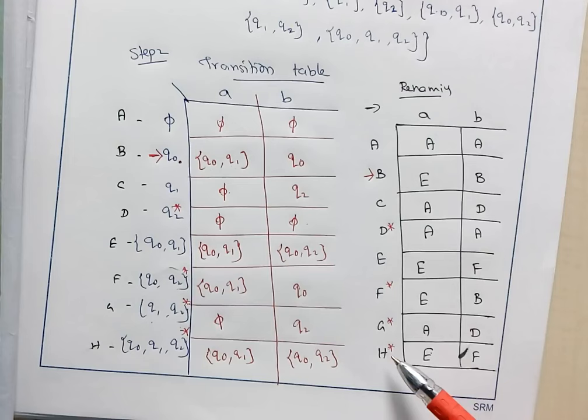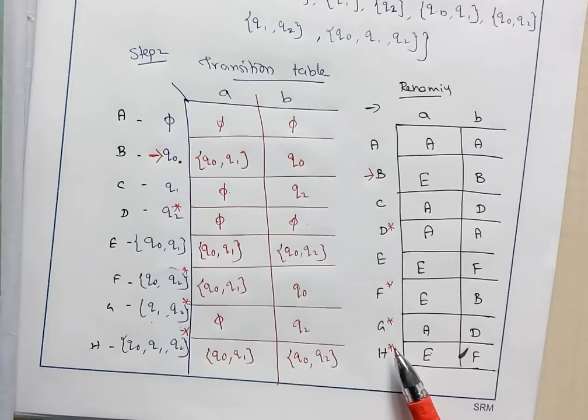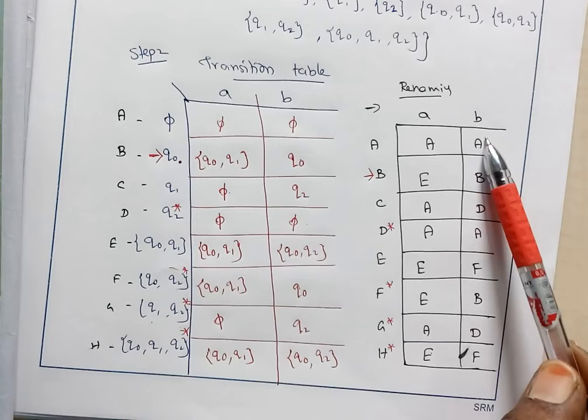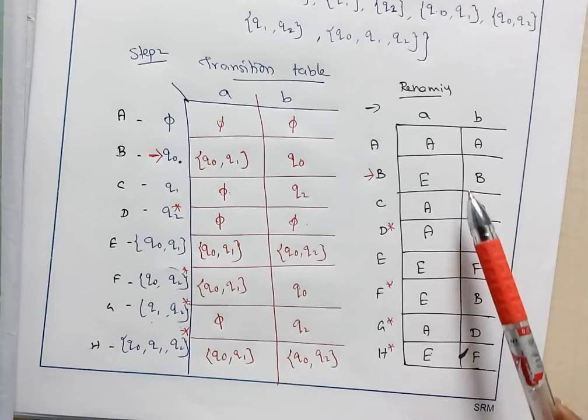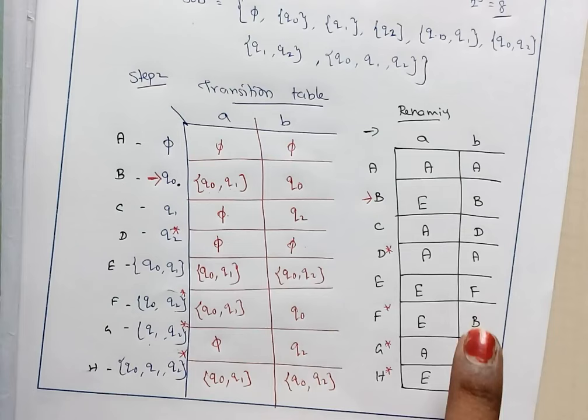Looking at this renamed table, from each and every state on each and every input symbol we have exactly one transition — no null transitions, no combination of sets. Each entry has a single state. So we call this a DFA. However, the problem is that we started with an NFA of 3 states and derived a DFA with 8 states. These unwanted states need to be eliminated.